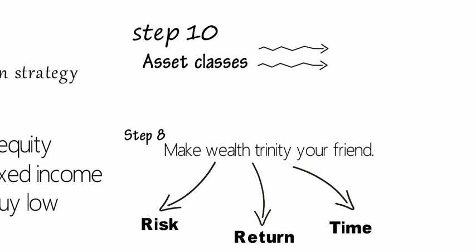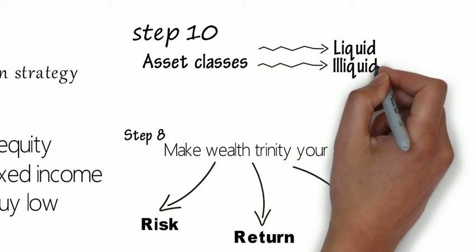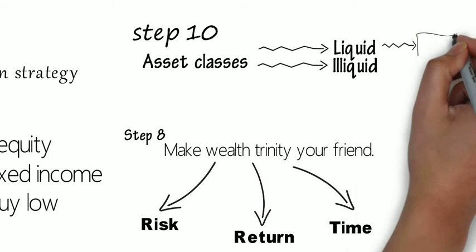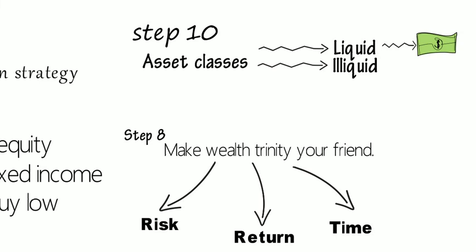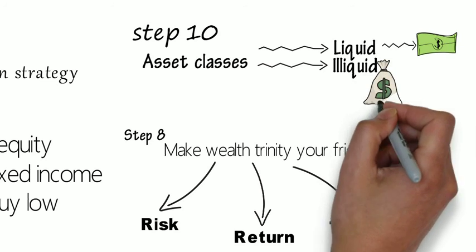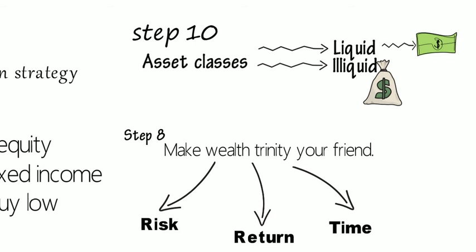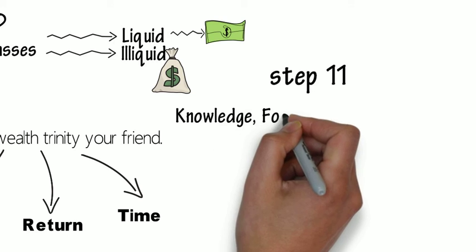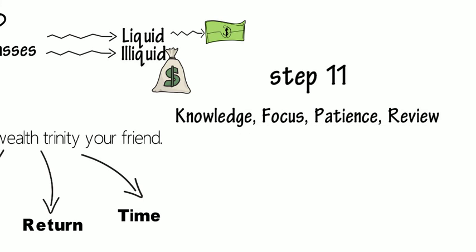Step number 10: Asset classes. Make sure you understand whatever asset that you're gonna buy. There are two types of them: first is liquid and second is illiquid. Liquid means whatever asset that you have can make you quick cash, and illiquid means whatever the asset that you have will make you money but not very shortly, let's say real estate for example.